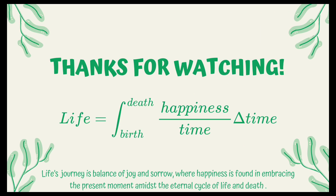This is Group 4, presenting our final equation. Life is equal to the integral from birth to death of happiness over time with respect to delta time, which means that life's journey is a balance of joy and sorrow. Remember that happiness is found in embracing the present moment amidst the eternal cycle of life and death. This is Group 4, going out with a bang.